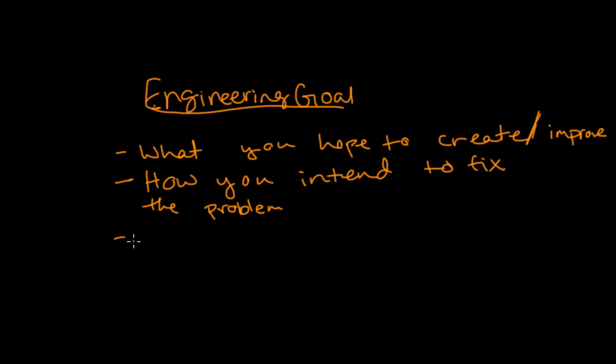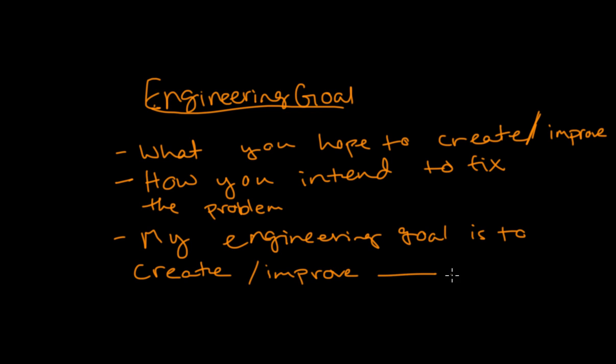So here's a sentence starter example for an engineering goal. My engineering goal is to create slash improve blank to better help blank. So if it's a creation that you're doing, then you would say to create and then blank. This would be what you're going to create to better help with blank. And that would be the problem that you're solving.